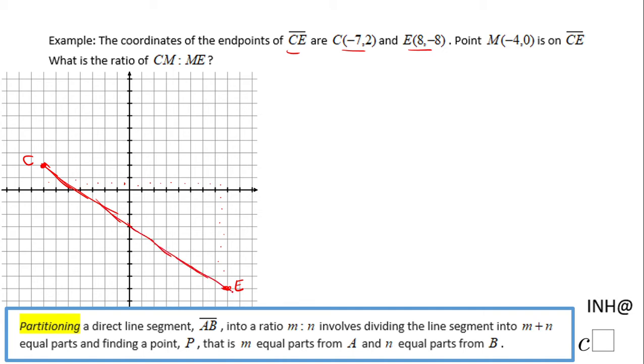This is the segment CE. And also we know M (-4, 0). That will be this guy here. The question is what is the ratio of CM to ME.